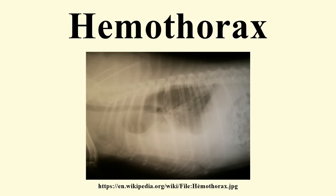A hemothorax is managed by removing the source of bleeding and by draining the blood already in the thoracic cavity. Blood in the cavity can be removed by inserting a drain in a procedure called a tube thoracostomy. Generally, the thoracostomy tube is placed between the ribs in the sixth or seventh intercostal space at the mid-axillary line. Usually the lung will expand and the bleeding will stop after a chest tube is inserted. The blood in the chest can thicken as the clotting cascade is activated when blood leaves the vessels and contacts the pleural surface, injured lung or chest wall, or the chest tube.